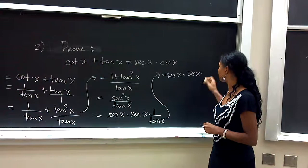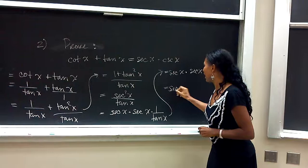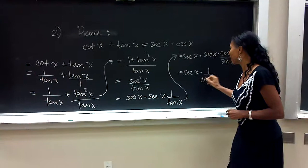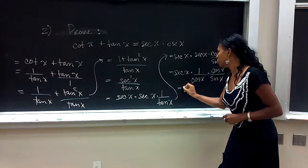And that becomes cosine x over sine x. Now watch this. Secant x times secant x times cosine x times cosine x divided by sine of x. These cosine x cancel out.